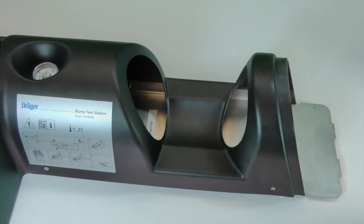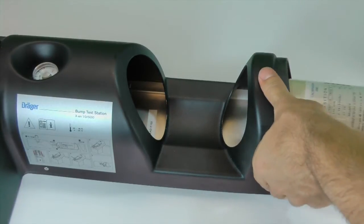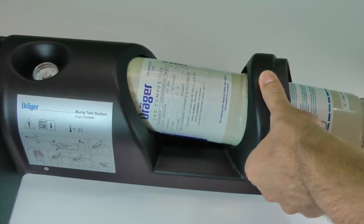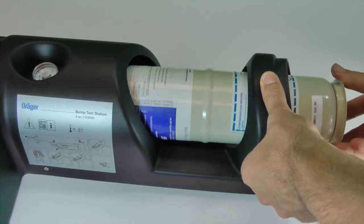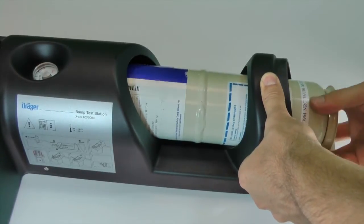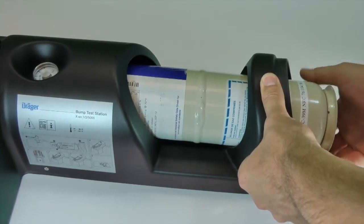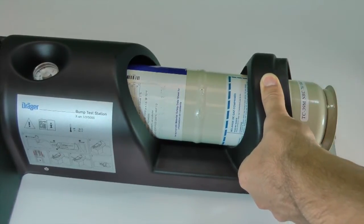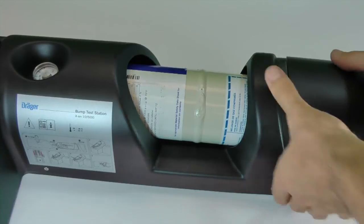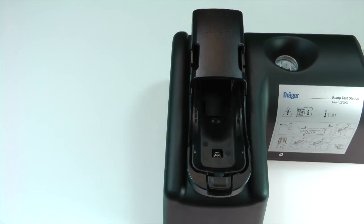Begin by inserting the appropriate calibration gas cylinder into the bump test station. Turn the cylinder clockwise until the cylinder is secured. Replace the bump test cap once the cylinder is inserted.